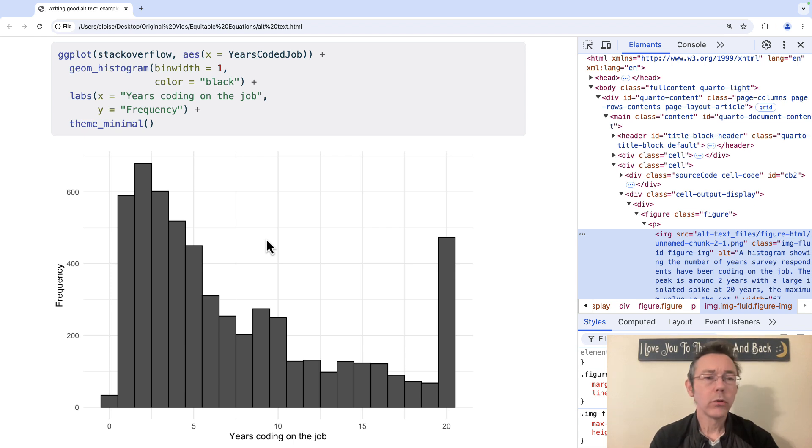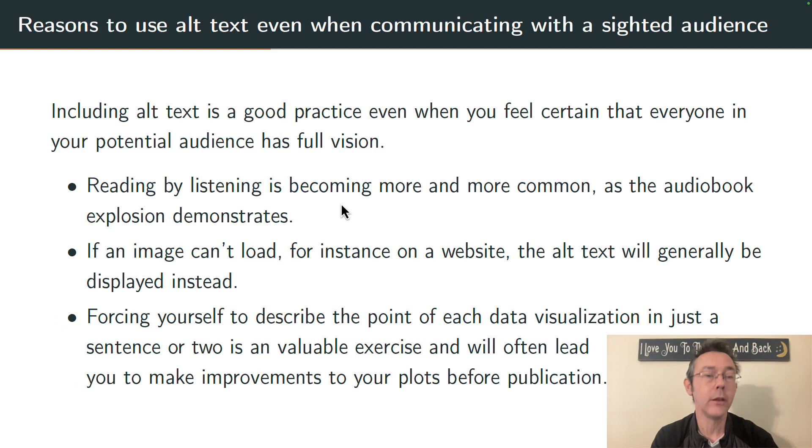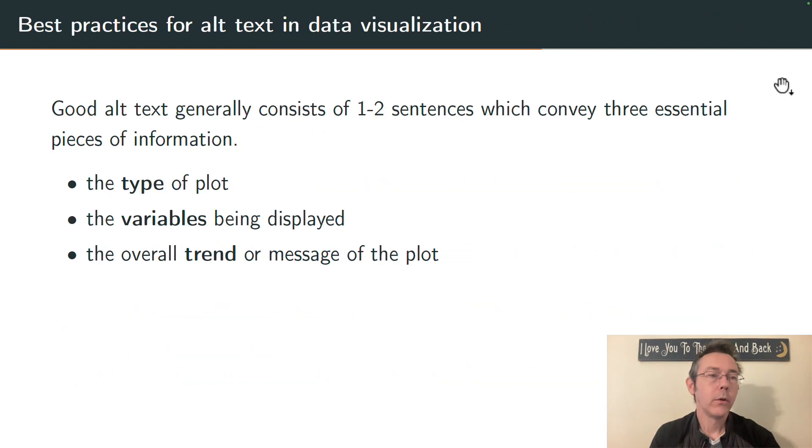So when you're writing alt text for a plot, what are some best practices? What should you actually be including in your alt text? There are really three things that you want to get across in just one or two sentences. You want to say what kind of plot it is, so in this case a histogram. You want to briefly describe the variable or variables that are being displayed and give a tiny bit of information about why you're including the plot. What's the overall trend?